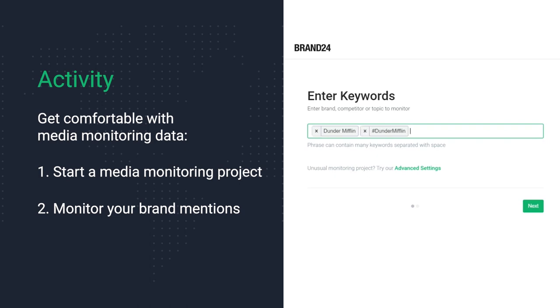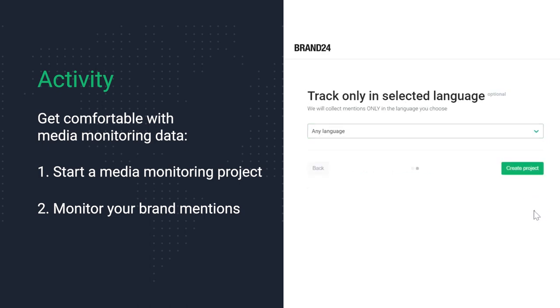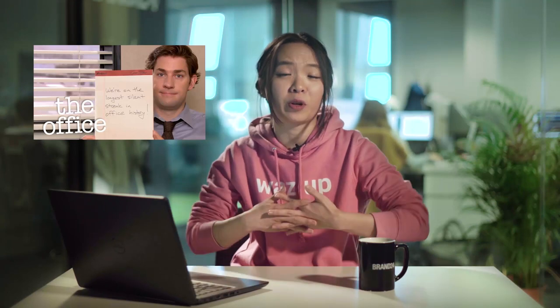Or if you don't have a brand or company yet, you can still follow along by monitoring one of your favorite brands. I'm going to use Dunder Mifflin as an example. You might have heard of it — it's a fictional paper sales company from one of my favorite TV shows, The Office. We're going to monitor the reputation of Dunder Mifflin on the Internet.